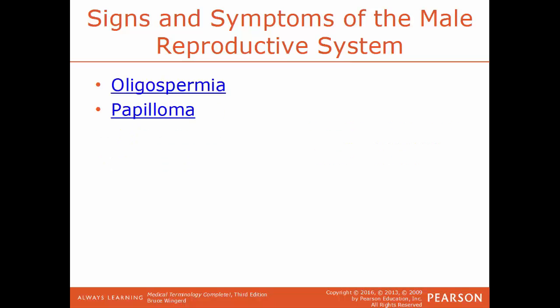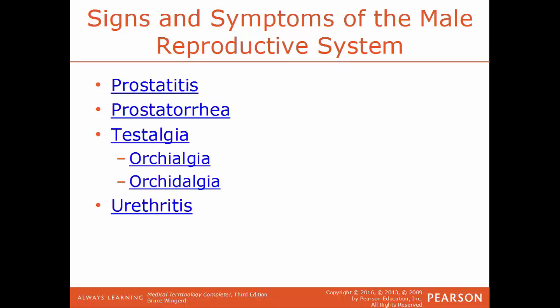Oligospermia is a male fertility issue where there is a low amount of sperm concentration within the ejaculate. Papilloma is a small wart-like growth found on skin or a mucous membrane, usually benign. Prostatitis is the inflammation of the prostate gland. Prostatorrea is an abnormal discharge from the prostate gland. Testalgia is pain in the testicles, also called orchialgia or orchidalgia. Urethritis is inflammation of the urethra.